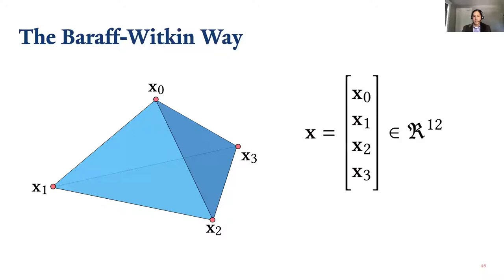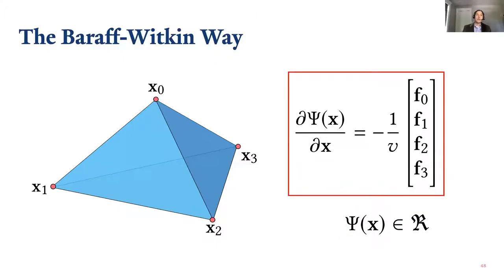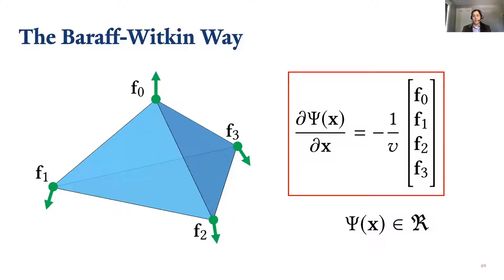In the Barraff-Witkin approach, we stack all positions into a 12-vector and define an elastic potential — a function that takes that stacked vector of positions and spits out a single scalar. If you take the negative gradient of this energy, it gives you the forces you care about. Once you have those forces, you apply them to the nodes.